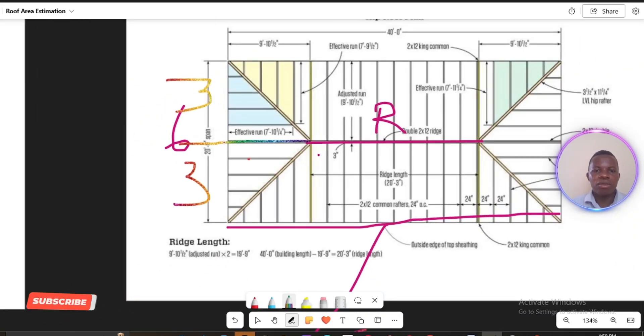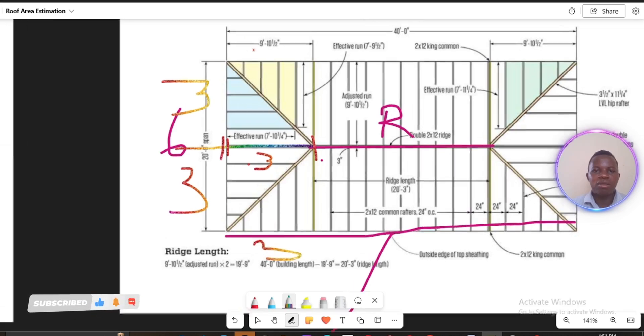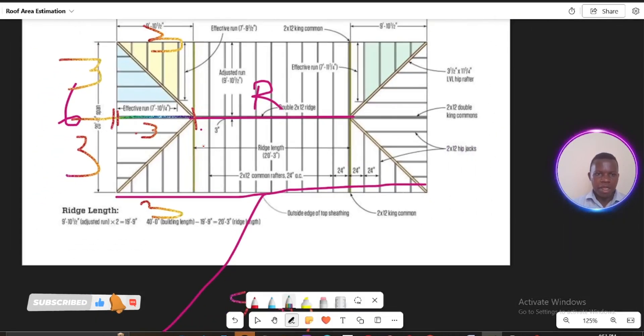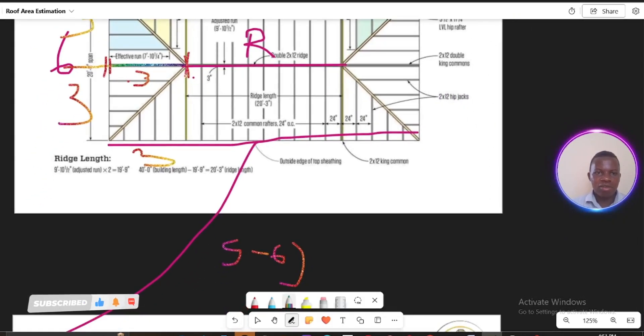And also this length between here, from the edge of our roof to the king post, it should be also of the same length, which is 3 meters. And also here we'll be having 3 meters, and on top here we'll also be having 3 meters. So having said that, then we can easily get the length of our ridge.